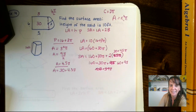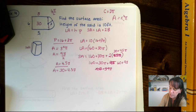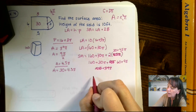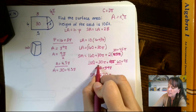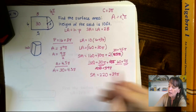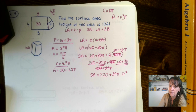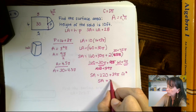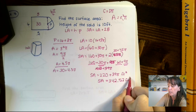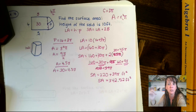Now combining: 160 plus 60 gives us 220, and 30 pi plus 9 pi gives us 39 pi. So the surface area is 220 plus 39 pi feet squared. You can leave it in terms of pi for the most accurate answer, or multiply out to get the decimal form: approximately 342.52. This may differ slightly from the book depending on whether you use 3.14 or the pi button on your calculator.